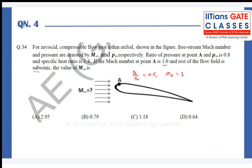Given the conditions, I'll assume this is steady, inviscid, compressible, and adiabatic. Since the rest of the flow field is subsonic, there is no shock wave — so it's also reversible. Combined, the flow is isentropic: steady isentropic flow over the aerofoil. I take one streamline going to point A and apply energy balance between the freestream and point A.